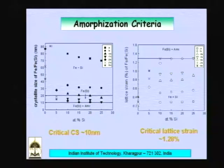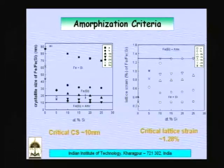The same is true in terms of strain: as milling time increases for different compositions, strain keeps increasing. Once a critical strain of about 1.3% is reached, the material becomes amorphous. This is true for any system, though specific values differ - for titanium-copper-nickel the critical strain is about 2.5%, whereas for BCC iron with silicon it is about 1.3%, reflecting the structural difference between FCC and BCC systems.